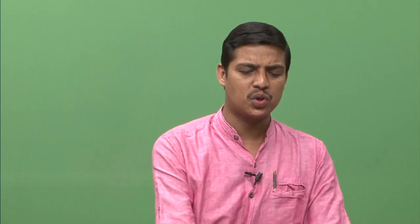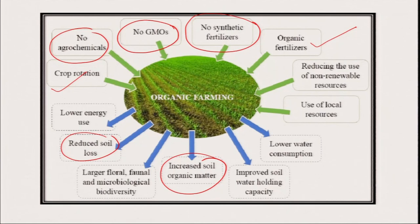Staggered planting also helps to reduce soil erosion and increase soil organic matter. Whenever soil organic matter or soil carbon is enhanced, it will help hold nutrients, help soil moisture, aggregate stability will be more, and erosion will be less.